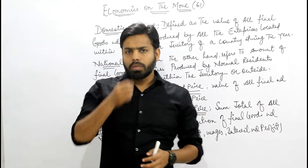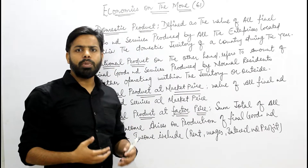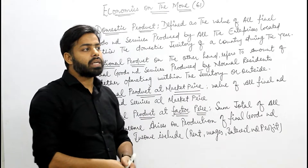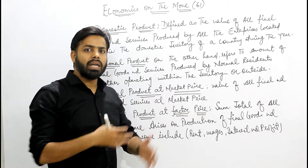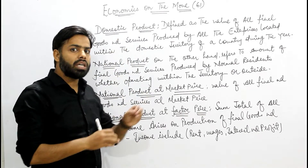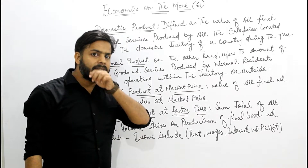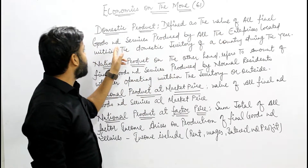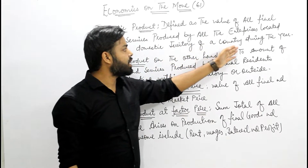Okay students, let's see what we are discussing today. We have discussed some about GDP and NNP. GDP is defined as the value of all final goods and services produced by all enterprises located within the domestic territory of a country during the year.